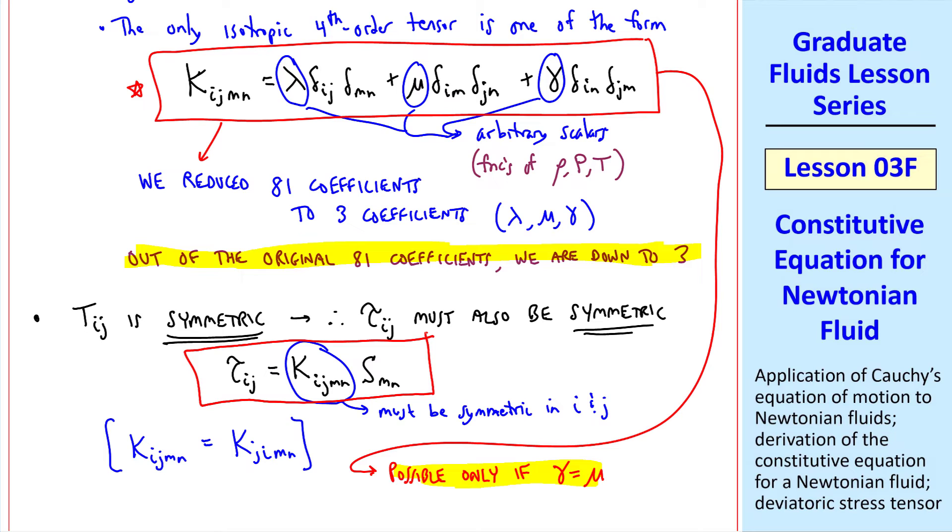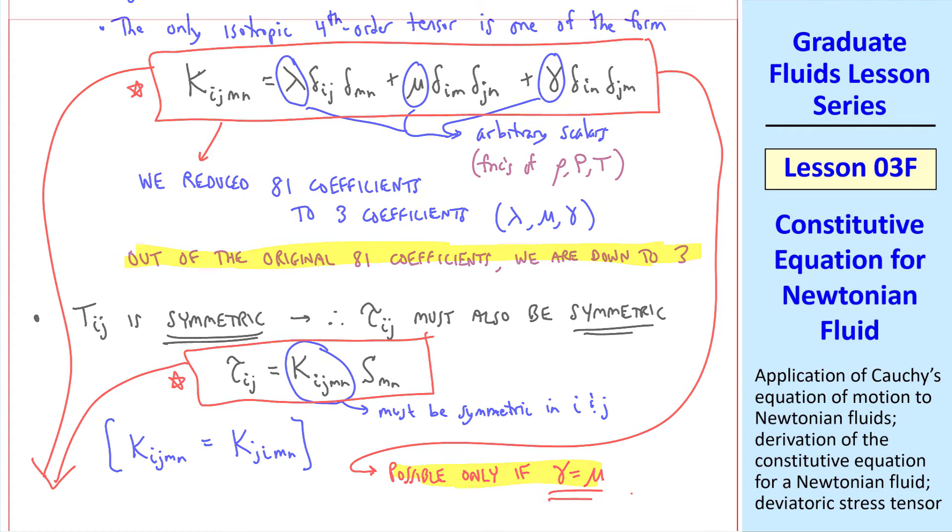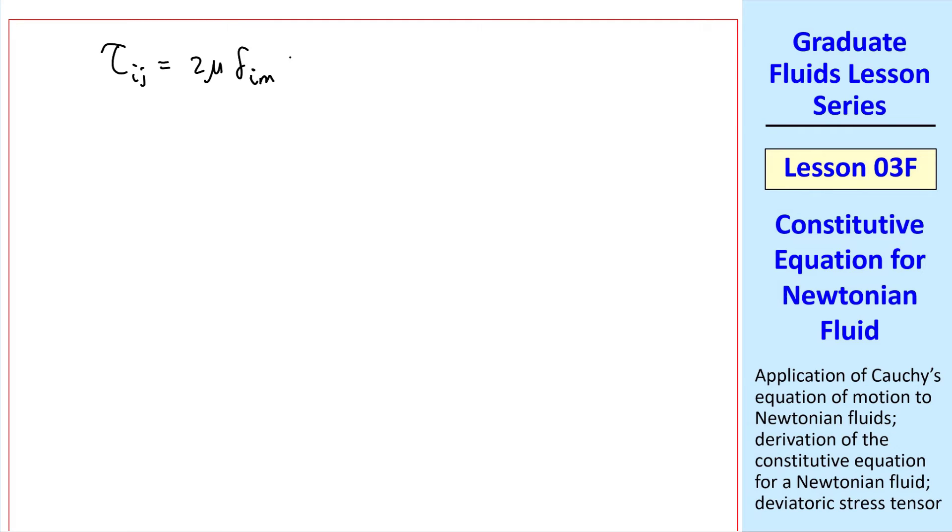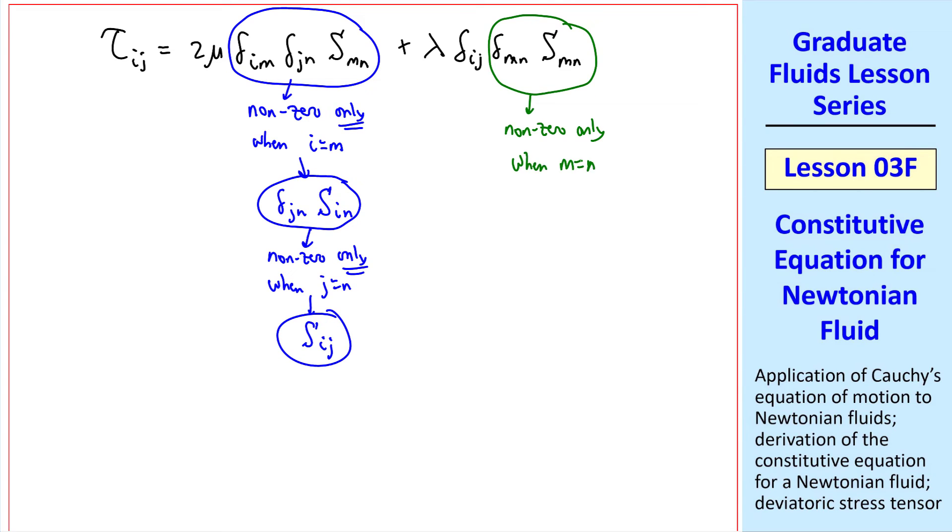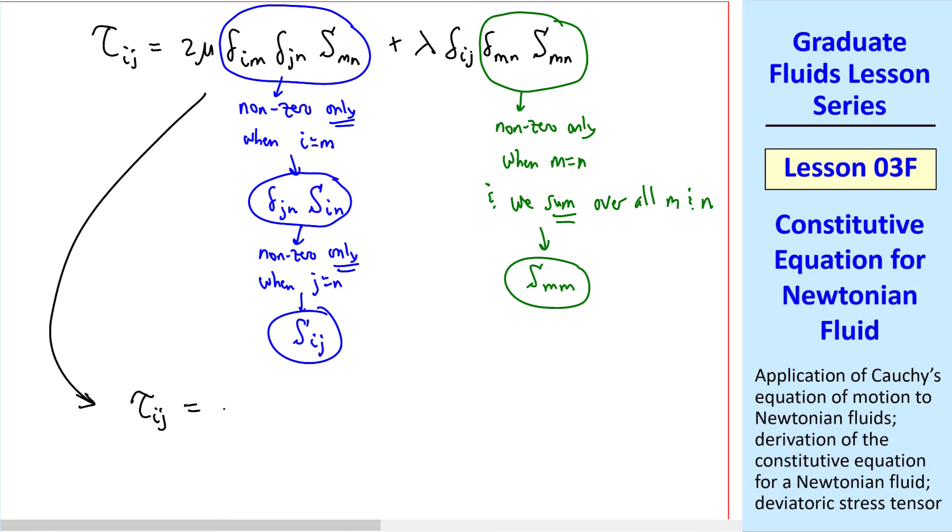Now we can rewrite this equation by plugging in this equation with gamma equal mu. The result is tauij equal 2 mu delta im delta jn smn plus lambda delta ij delta mn smn. Now let's do some fancy contractions with tensor notation. This grouping of terms is non-zero only when i equal m. So we can rewrite this as delta jn sin. But this is non-zero only when j equal n. So this reduces to sij.